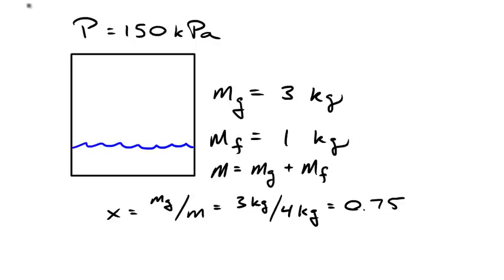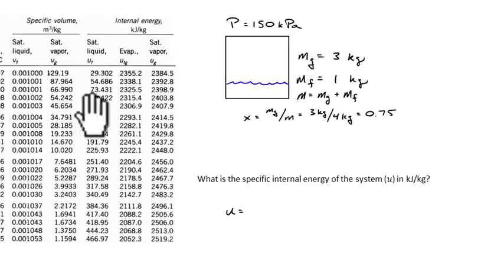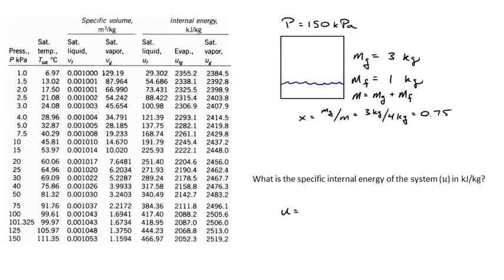The first question about temperature is straightforward. It's vapor and liquid in equilibrium at 150 kilopascal — about one and a half atmospheres — so we expect the equilibrium temperature to be greater than 100°C. Looking up 150 kilopascal in the saturated liquid table, we get a temperature of 111.35°C.